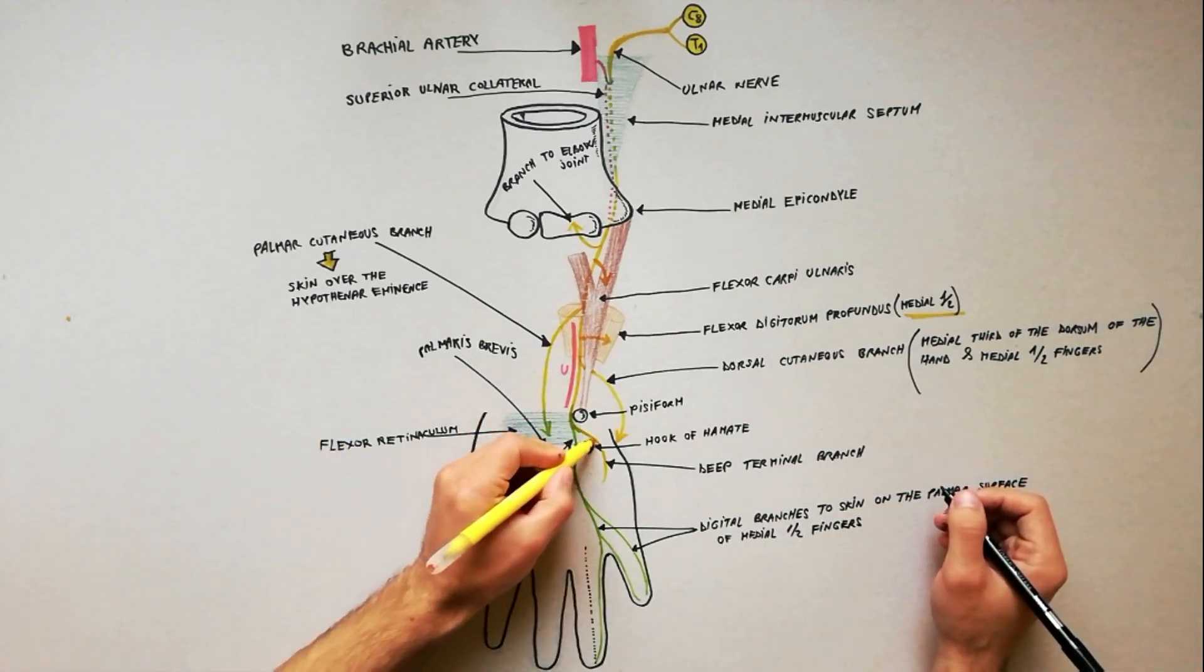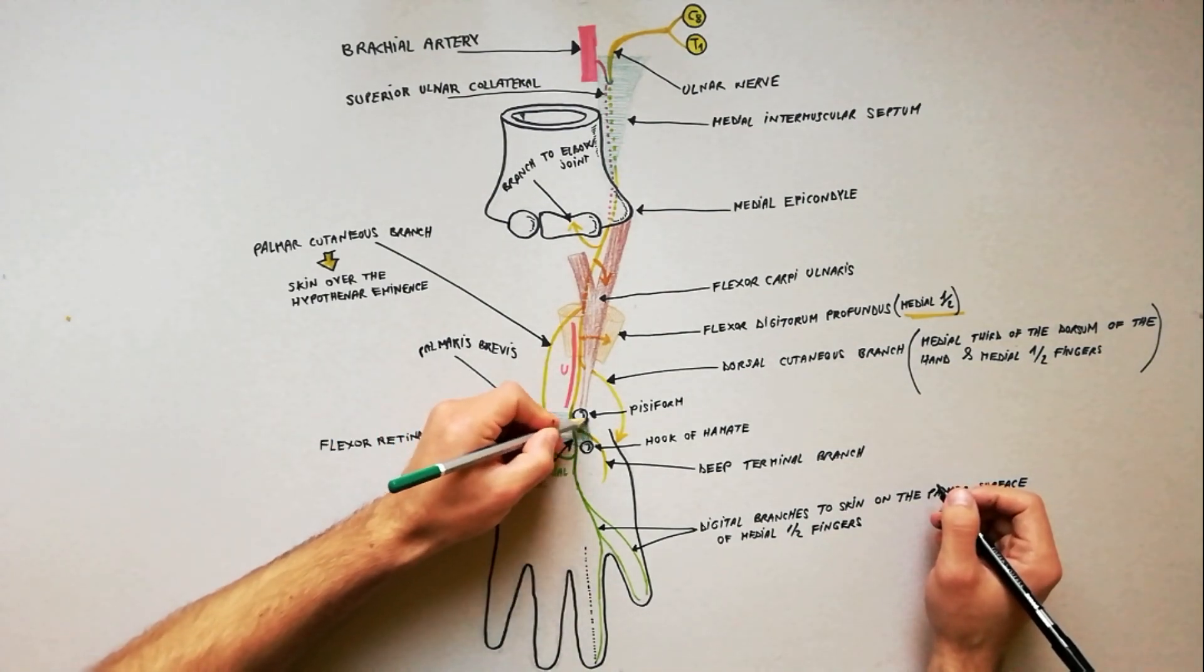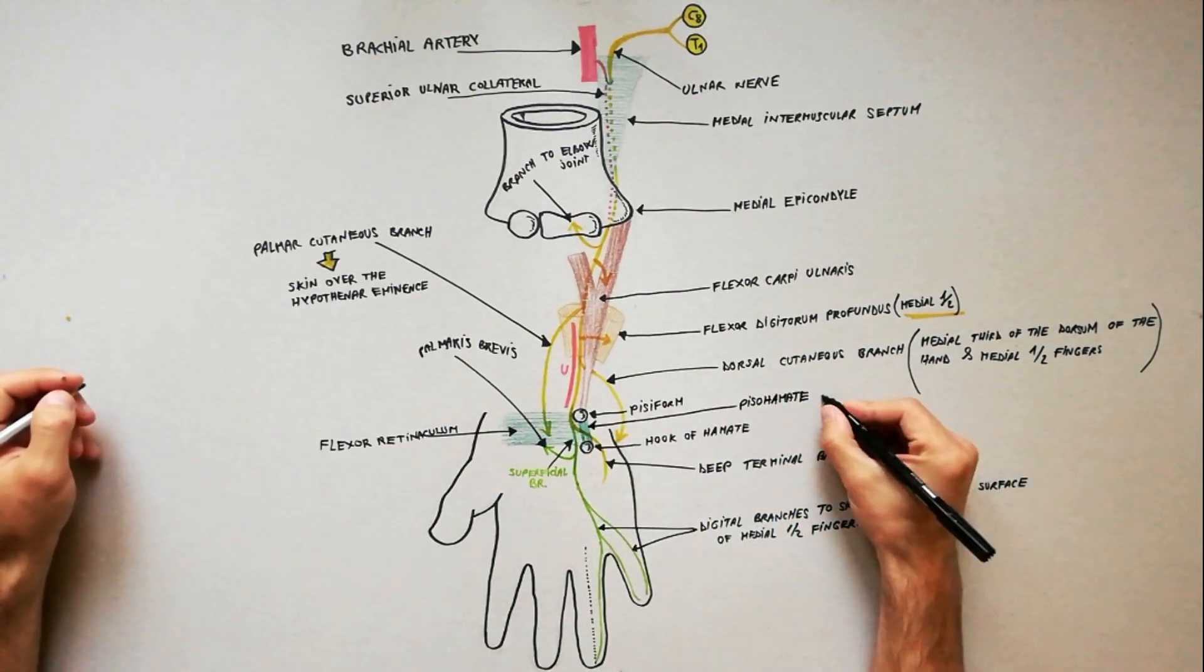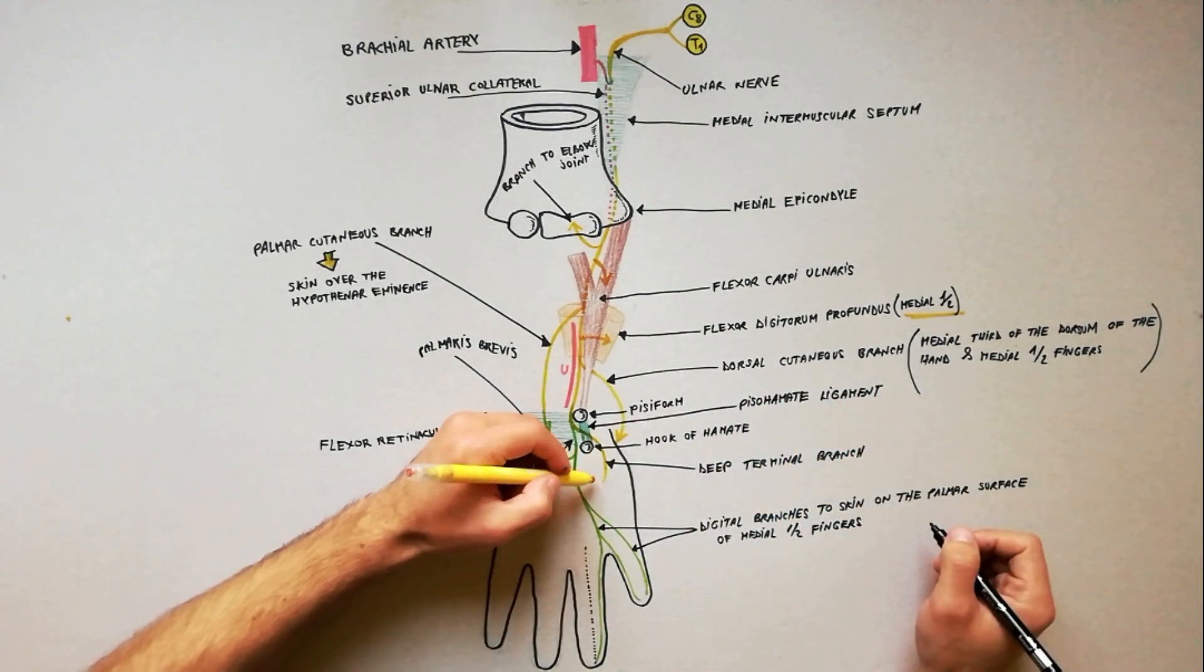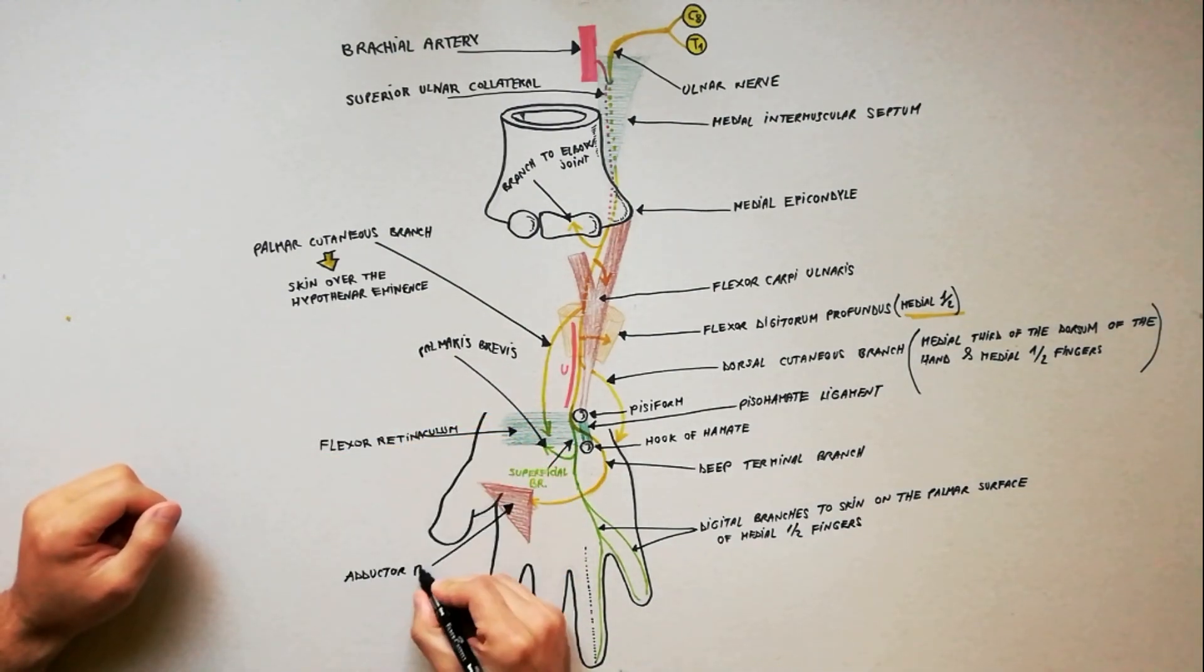The deep terminal branch is purely motor and passes between the pisiform and the hook of hamate under cover of pissohamate ligament and turns laterally, ending within substance of adductor pollicis which it supplies.